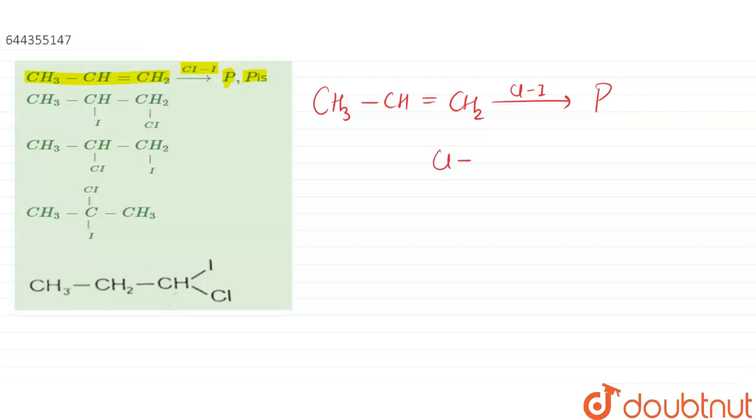What happens is, in CLI we know that electronegativity of chlorine is more than iodine. So it will pull electron towards itself, that means the electrons of this bond will go there and this will break into I plus and CL minus ion, that means here chlorine will act as a nucleophile and iodine as an electrophile.